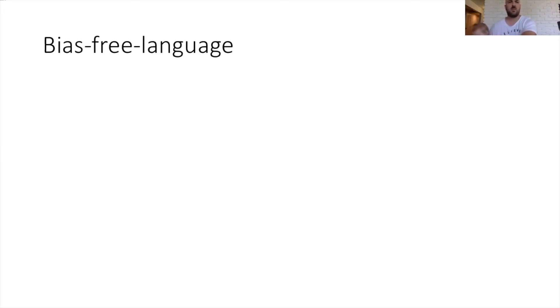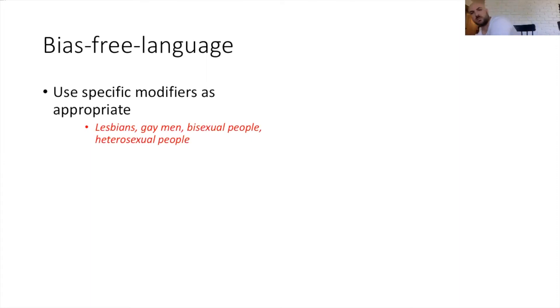Another thing that's important to keep in mind with APA style is writing in bias-free language. So be specific. Use appropriate specific modifiers throughout. If you're talking about heterosexual people, then say heterosexual people, don't just say people. If you're talking about gay people, be specific. Are you talking about lesbians? Are you talking about gay men? Use the appropriate modifier.